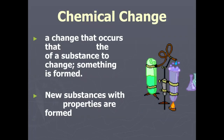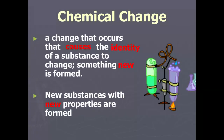Chemical changes are changes that do cause the identity of a substance to change. So in essence, something new is formed that wasn't there before. You've got new substances with new properties — some things are combining together, but you end up with a completely new thing with new properties.